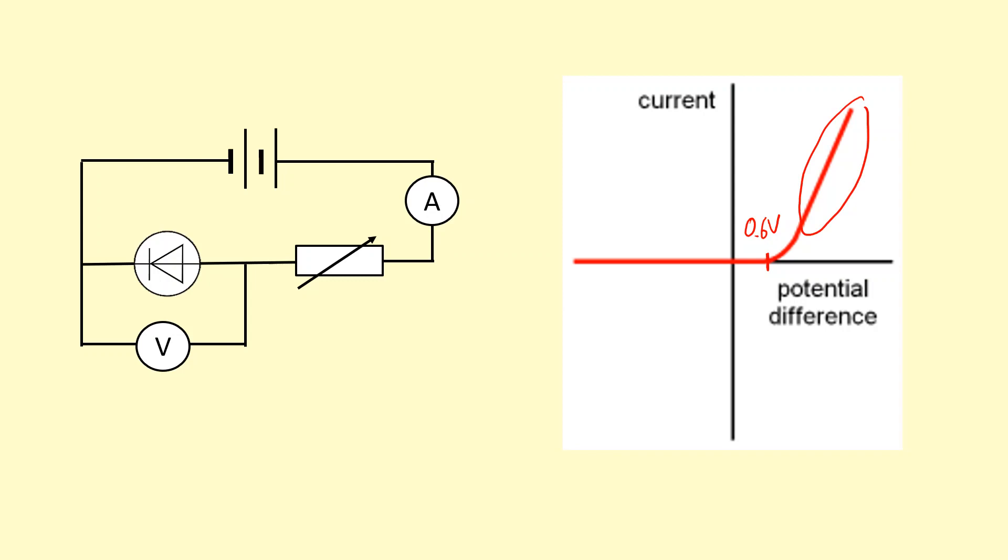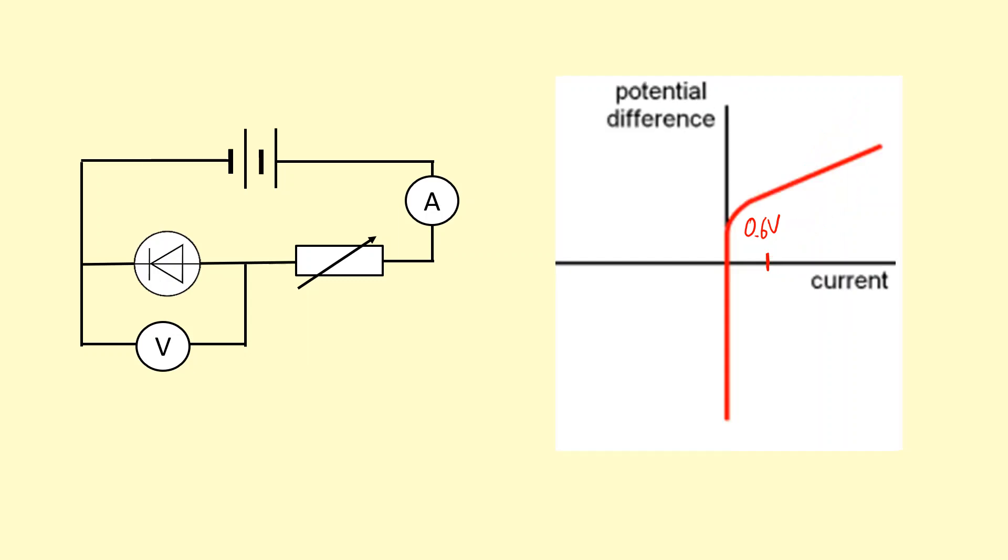At that point, once it's starting to conduct above 0.6 volts, it's actually got quite a low resistance and it's quite a good conductor. And just if you wanted to know, the IV characteristics can be plotted with a potential difference on the y-axis and the current on the x-axis.